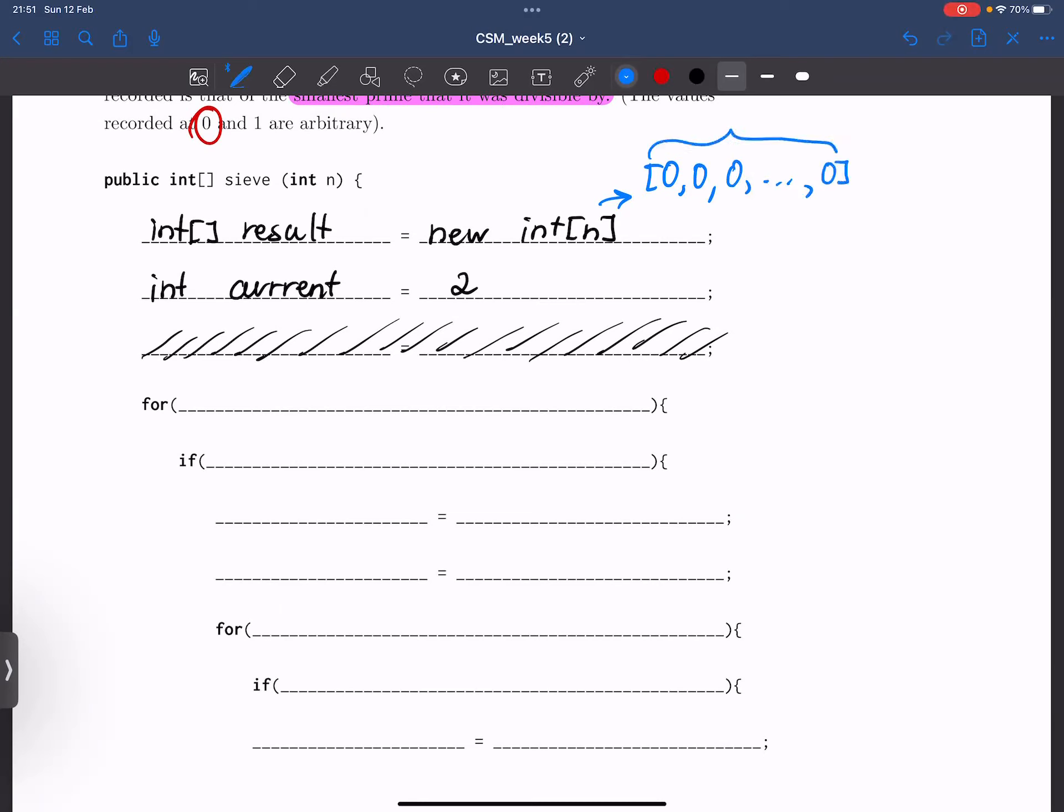Therefore, since we don't need to change the values at the first two indexes, we don't need to manipulate them at all. So it just makes sense to start from the index 2. So let's create our integer i, which is going to cover every value in our array from 2 to n minus 1 included.